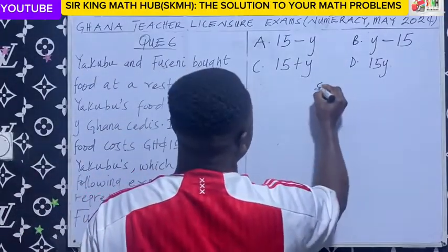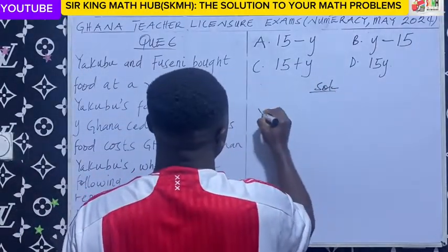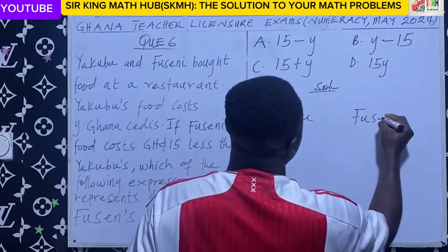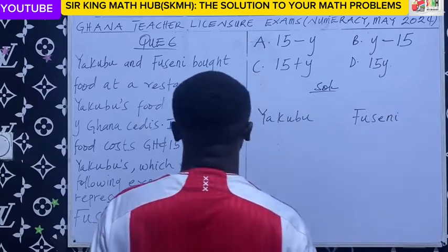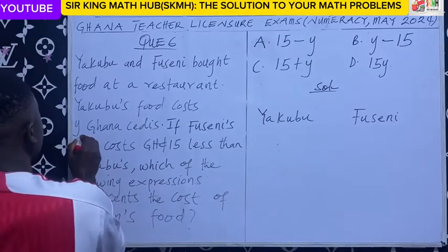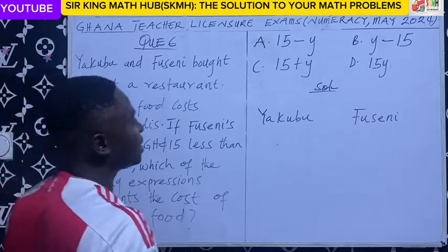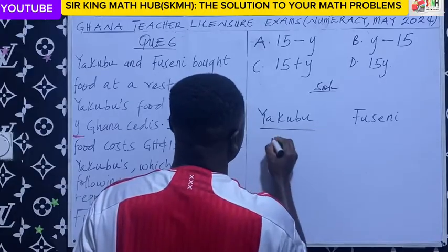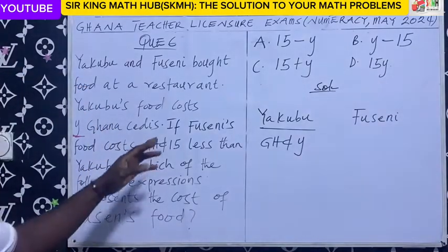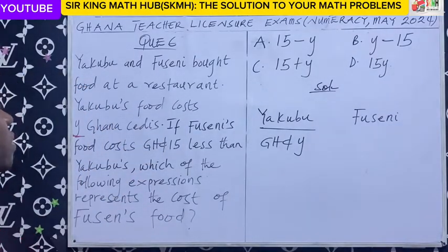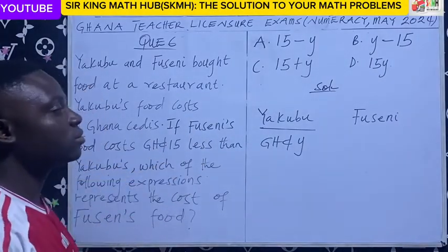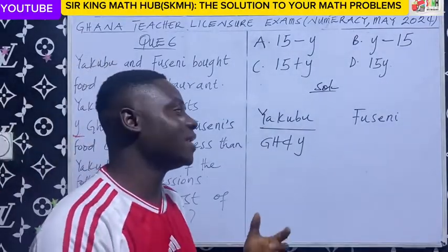Now this time, these are the names of the two friends. We have Yakubu. Yakubu's food costs Y Ghana cedis. And what is the cost of Husseini's food? We are told that Husseini's food costs 15 Ghana cedis less than Yakubu's food — 15 Ghana cedis less than Yakubu's food.